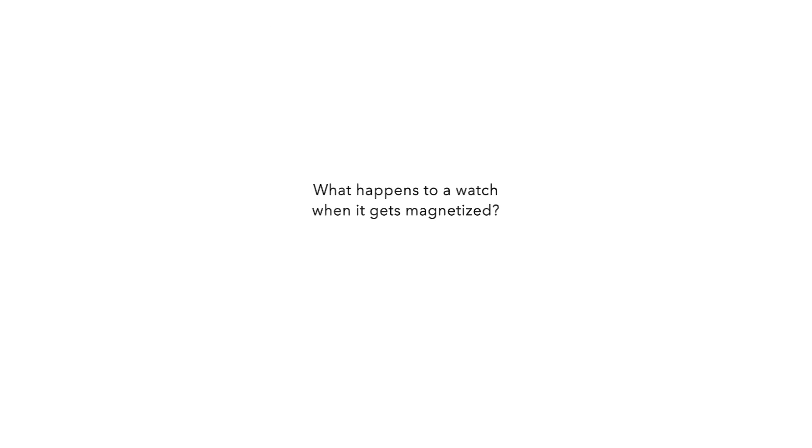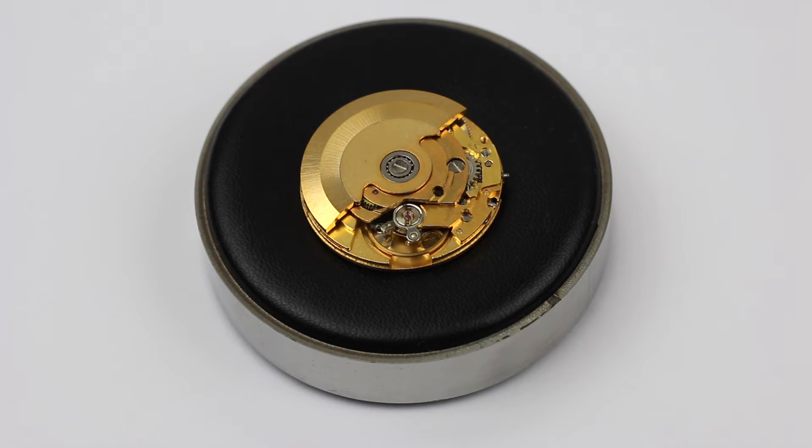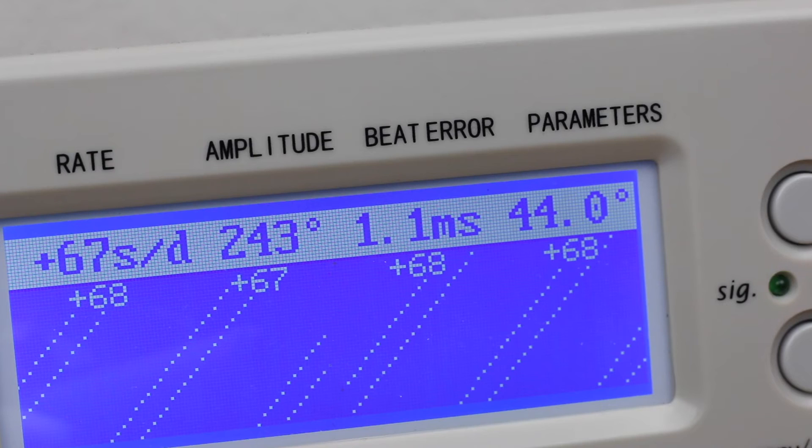Well first of all there are two things that occur usually when your watch is magnetized. The first option is that your watch stops altogether. This is either because something broke or something got affected so much that it renders the watch unable to be working. And the second thing that we mostly see with watches who have been magnetized is the fact that they suddenly run very fast for no apparent reason.